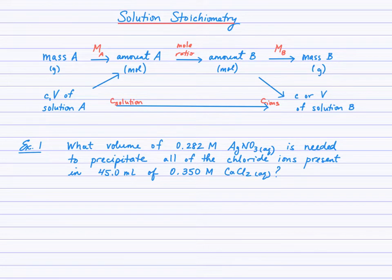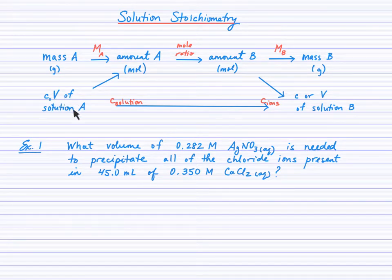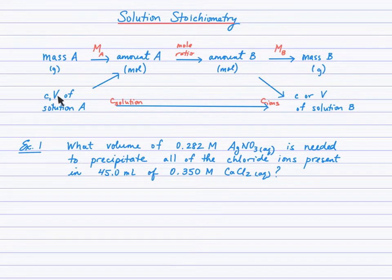Now that we've studied solution chemistry, we realize that it's most common to have information about the volume and concentration of a solution. So knowing that we have the concentration and volume of a solution, how could we find the moles of solute present? Given C and V, how do you find moles?